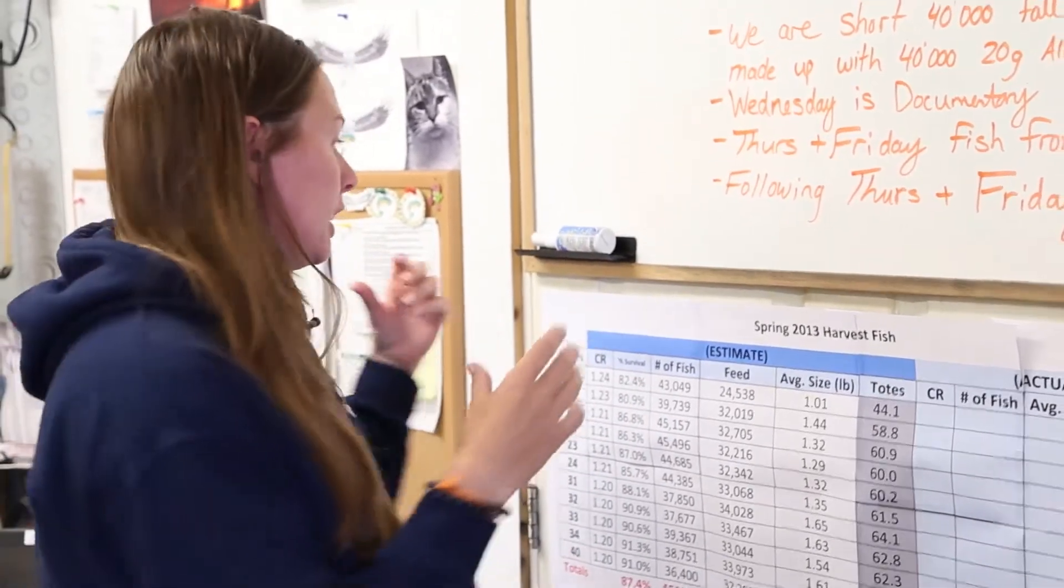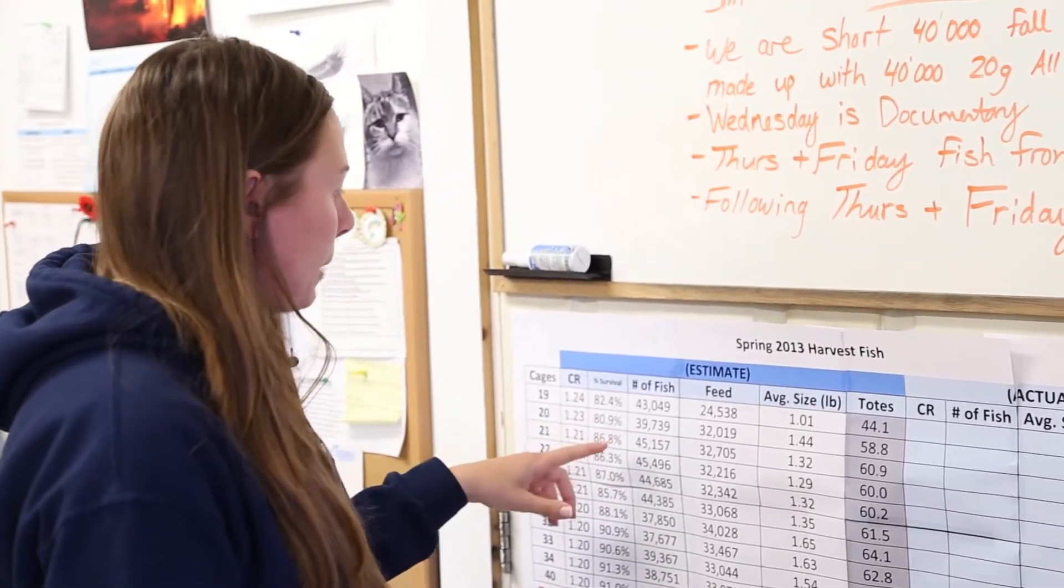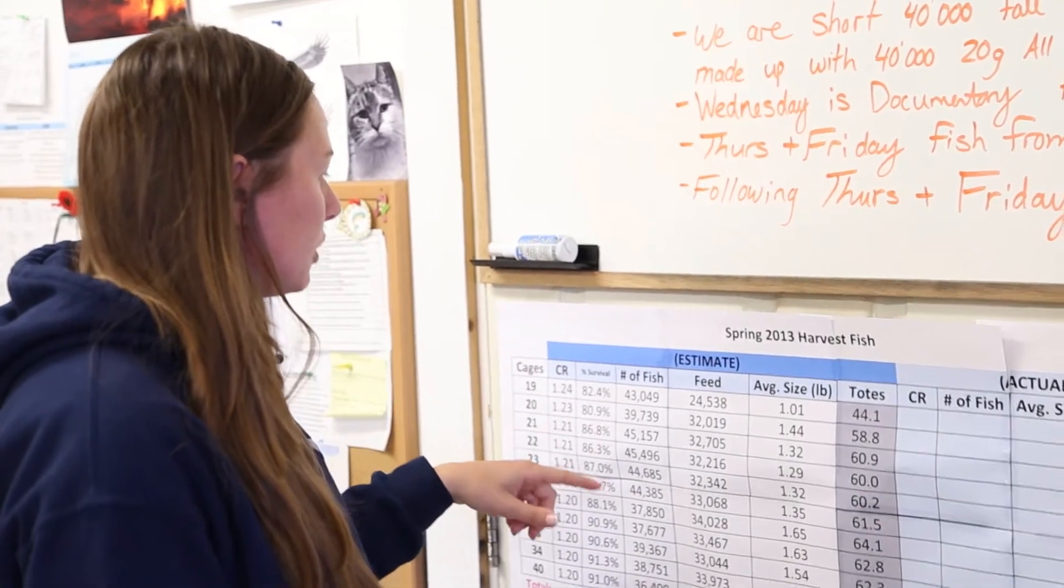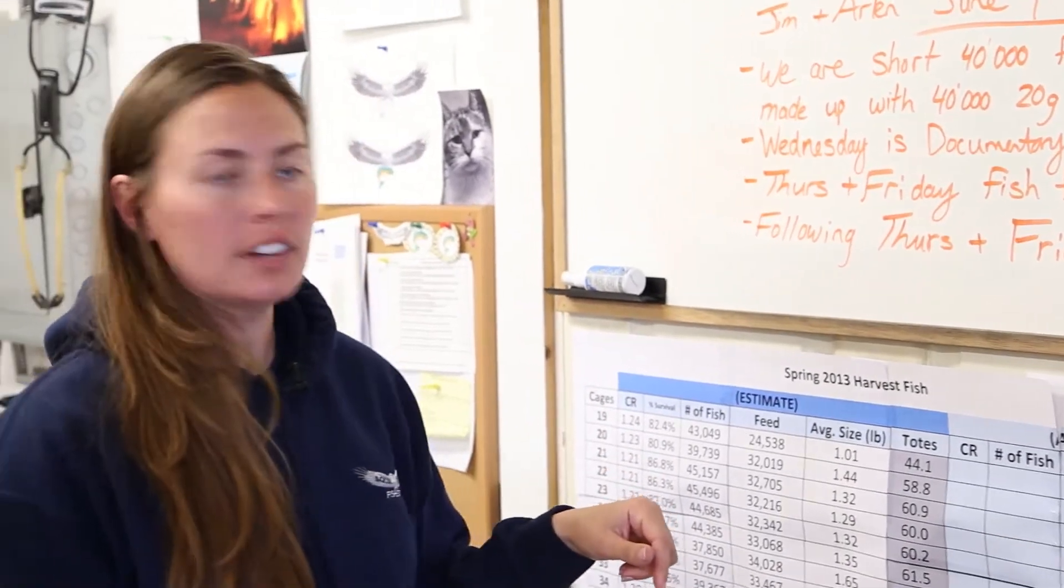If you can look at this in terms of pounds, you can say 1.24 pounds of feed to make one pound of fish.